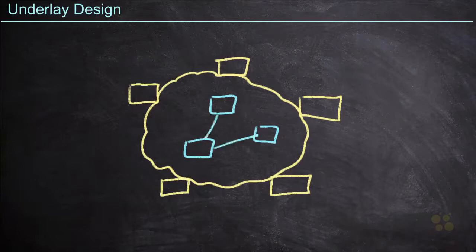So these underlay devices are typically going to be configured in some kind of topology. It doesn't really matter, it's why it's an underlay. We're going to build that overlay regardless of what the underlying topology looks like. So what do we need to consider?